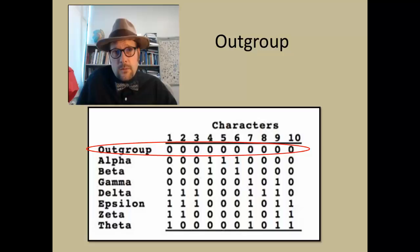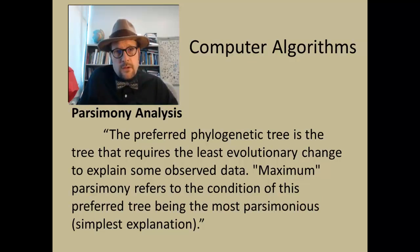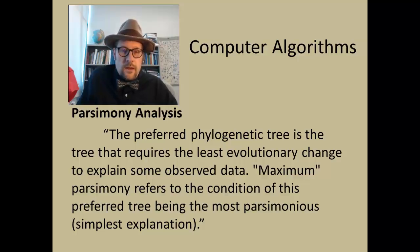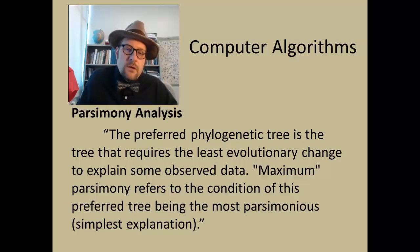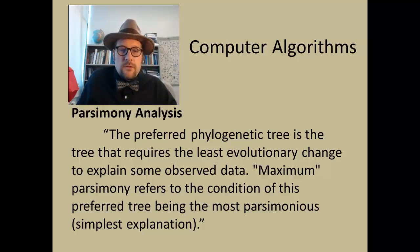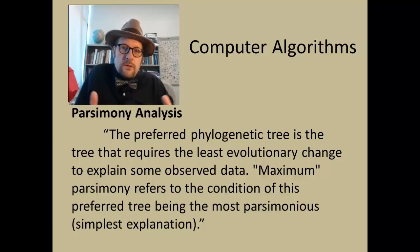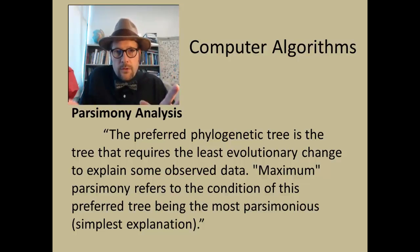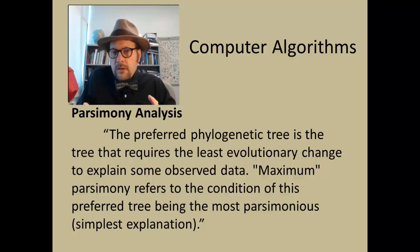Once you've assembled a large matrix, you run computer algorithms using parsimony analysis. The preferred phylogenetic tree is the one requiring the least amount of evolutionary change to explain the observed data — the most parsimonious, or simplest, explanation. The computer constructs a tree that explains all the data with the fewest changes. This doesn't necessarily mean it is the correct tree; it means it is the simplest given the data entered.